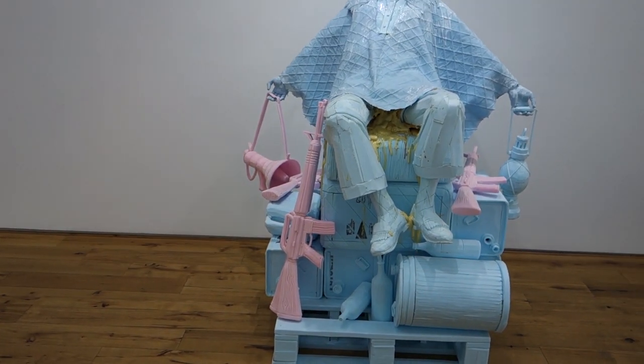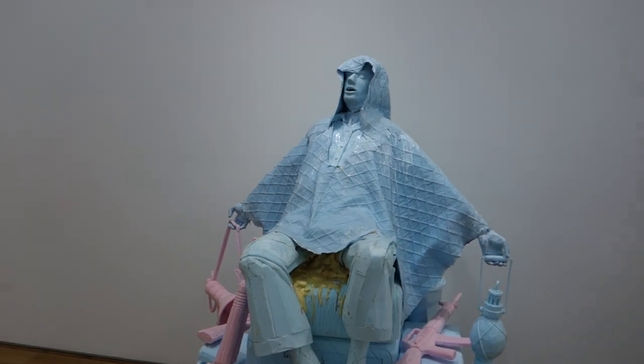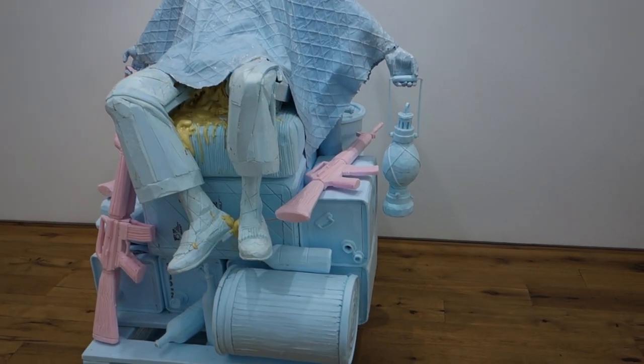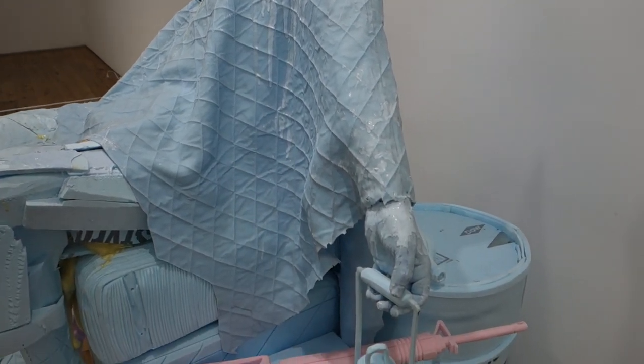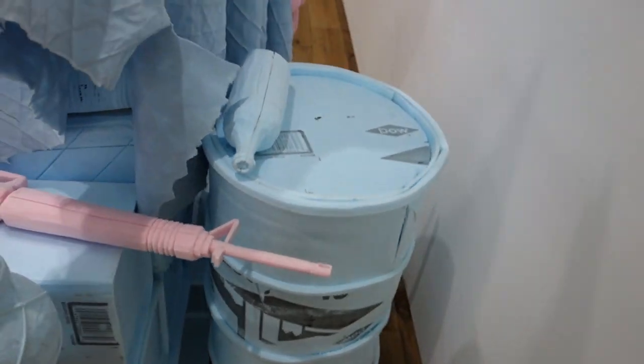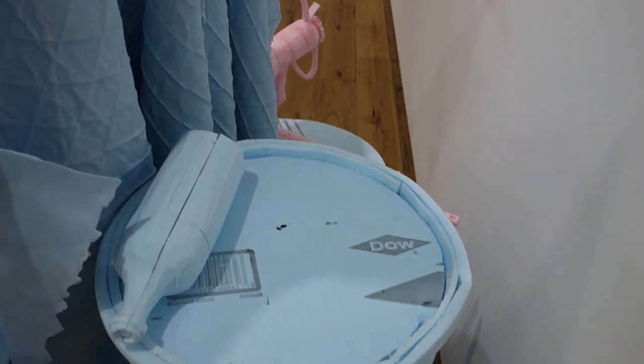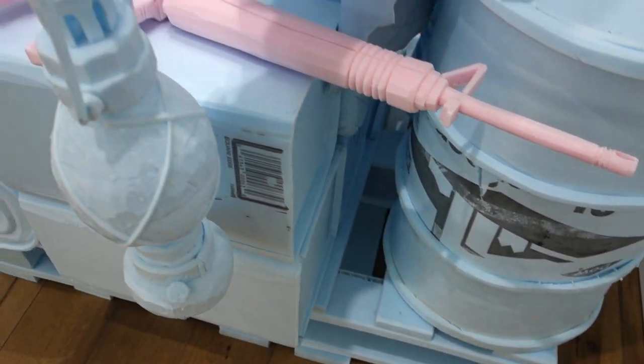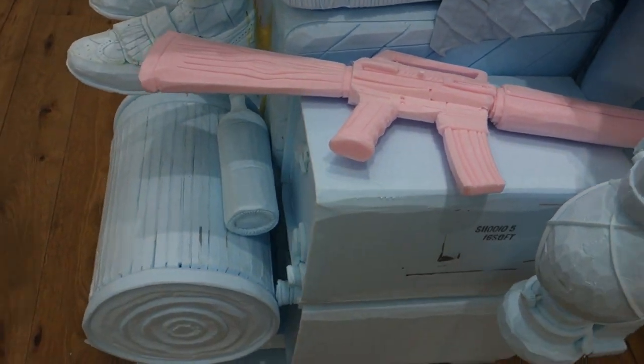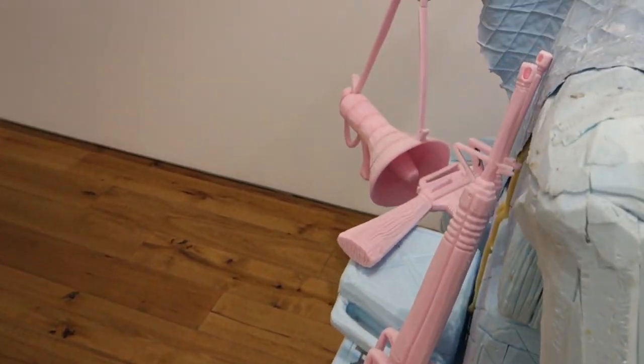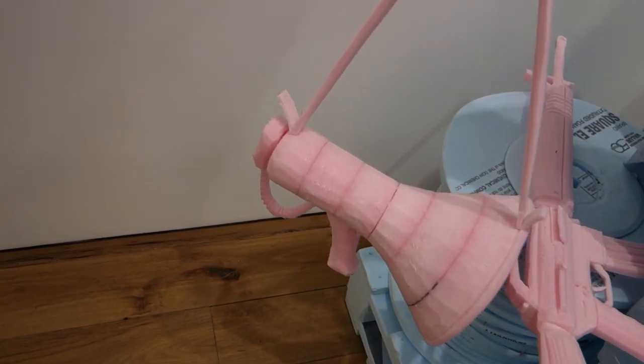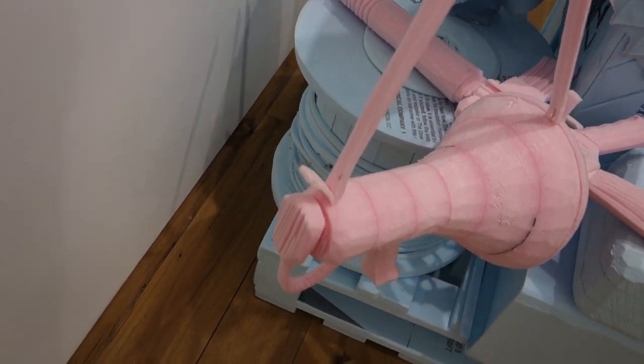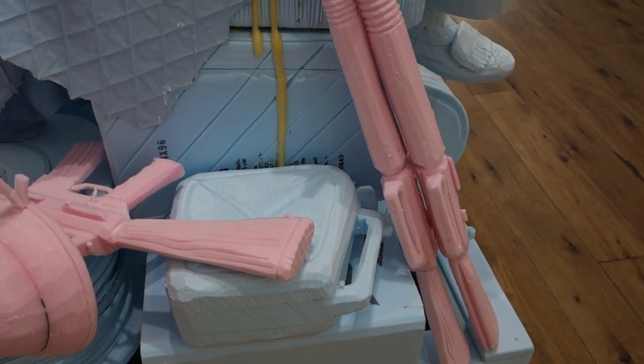This is by Folkert de Jong titled Dust, 2004, styrofoam polyurethane foam silicone rubber, 67 by 39 by 39. Well it seems like there is a lot of work that we've been seeing lately that is incorporating or featuring styrofoam.